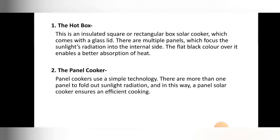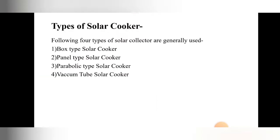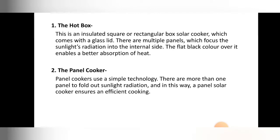The first type is the hot box or box type solar cooker. This is an insulated square or rectangular box solar cooker which comes with a glass lid. Multiple panels focus sunlight radiation into the internal side, and a flat black color coating enables better absorption of heat. The black colored metal plate inside focuses sunlight to cook the food.